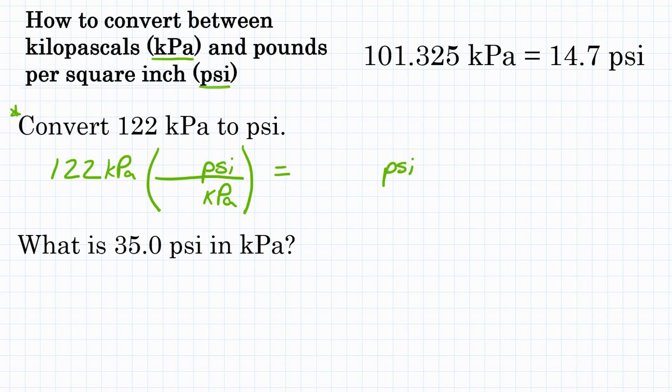So what is the relationship between kPa and PSI? Well, 101.325 kPa is equal to 14.7 psi. So we'll put those numbers in with their respective units. So on the bottom, we'll have 101.325 kPa. And on top, we'll have 14.7.